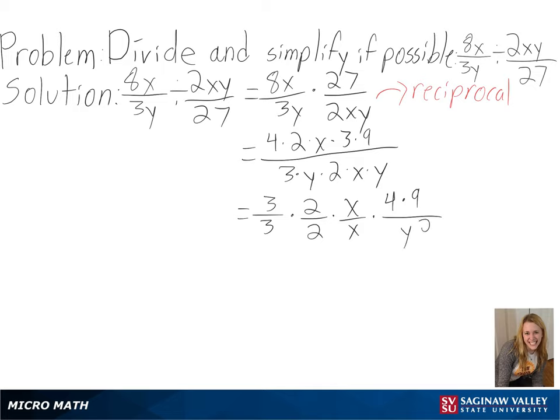Then we have 4 times 9 over y squared to get 36 over y squared, and this is our final answer.